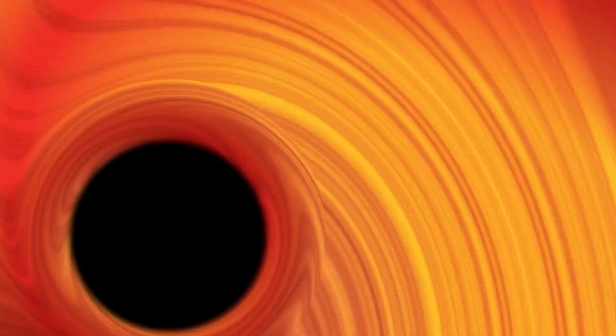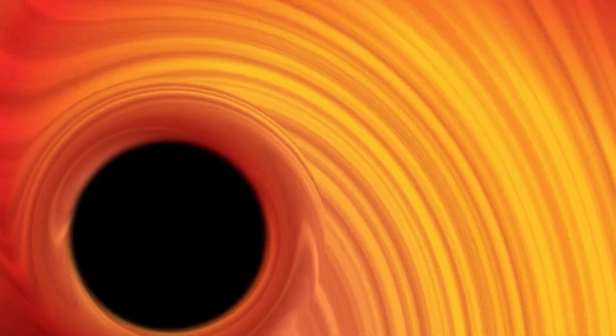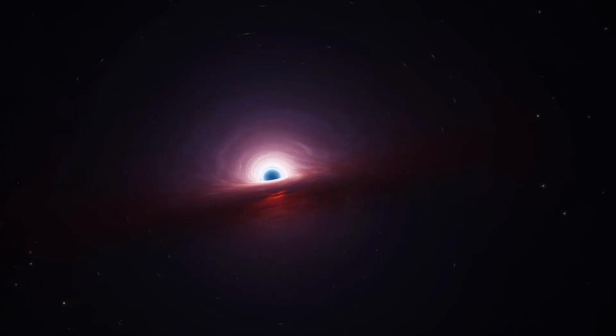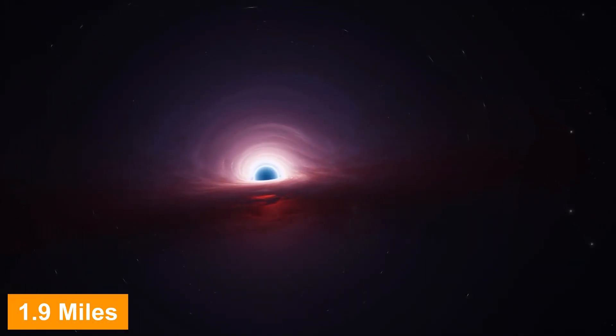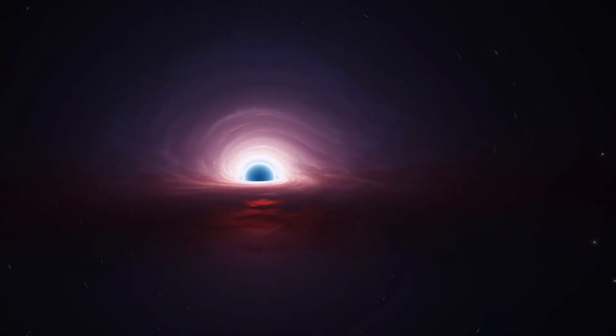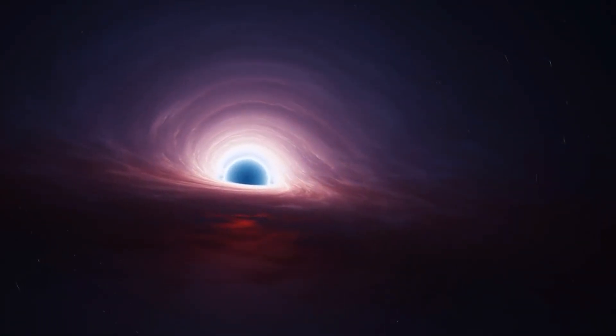Fascinatingly, once a black hole is born, it spans just a few dozen miles in diameter. For instance, if our sun were to transform into a black hole, its radius would shrink to a mere 1.9 miles, compared to its current girth of around 432,450 miles. Is it not fascinating?